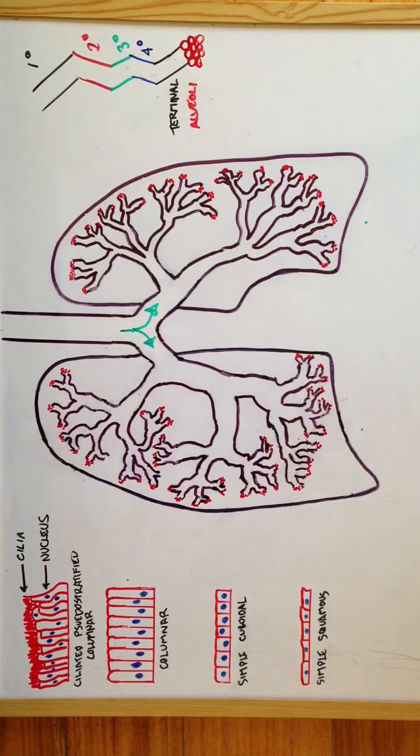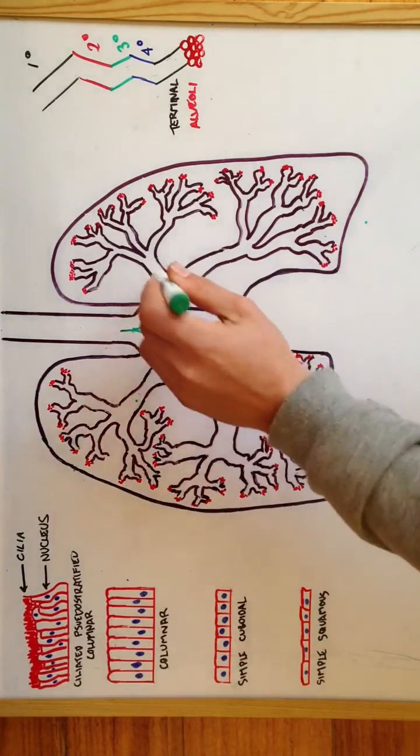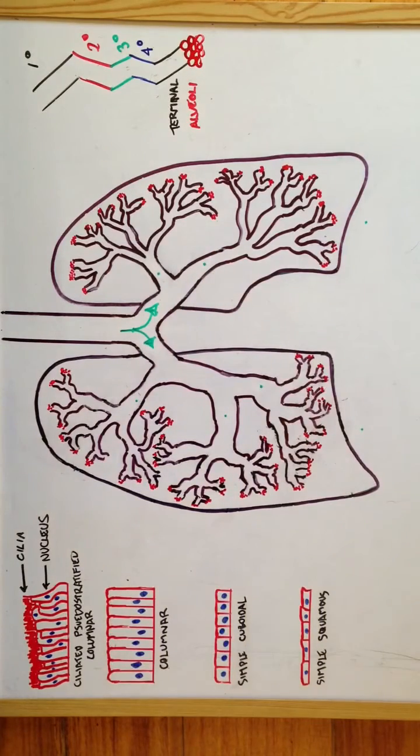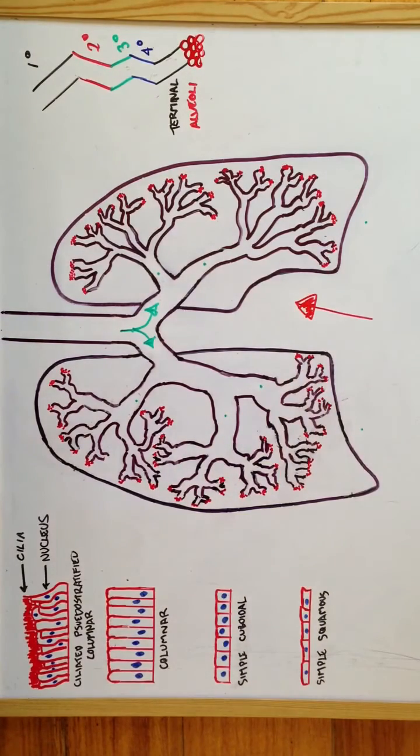From the right and left primary bronchi, they will then divide into their respective secondary bronchi. As you can see, the right lung contains three main secondary branches as the left only contains two. This is because the left has less surface area due to the cardiac notch, which is this space here where the heart lies.